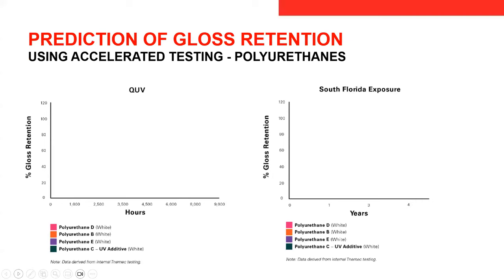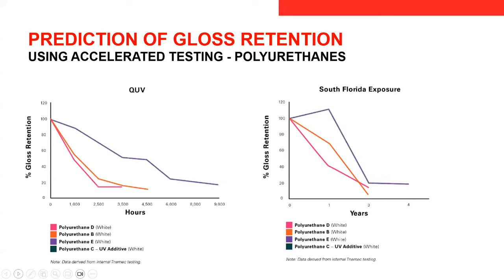Moving on to QUV, a commonly encountered accelerated laboratory test — you'll see a lot of this data when looking at color and gloss data for coatings. Comparing to South Florida exposure: the first polyurethane crashes relatively quickly with both South Florida and QUV. The second is in the same ballpark within three years of South Florida and about 2,500 hours of QUV. The third polyurethane hangs on a little better, and the fourth much better than the first. So even amongst the same generic classification, polyurethanes, you do see a difference in performance level.